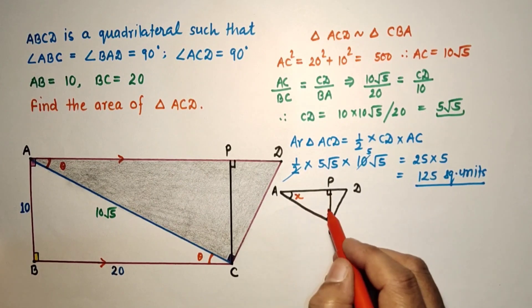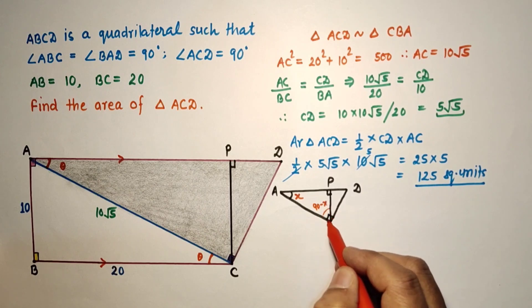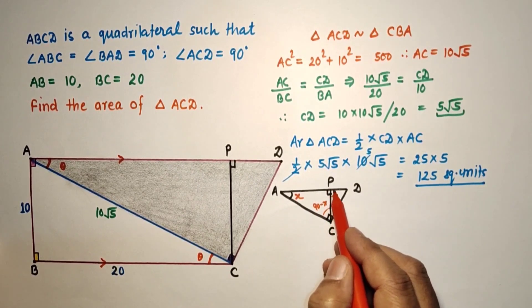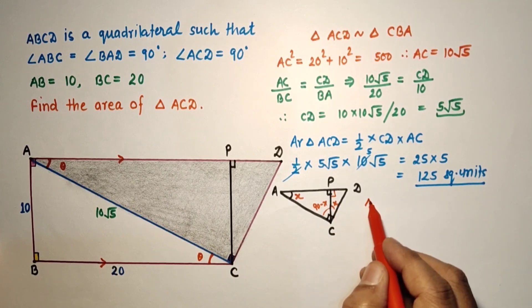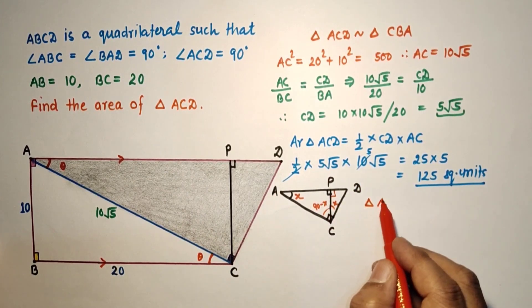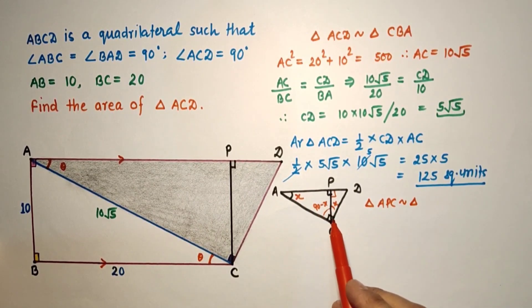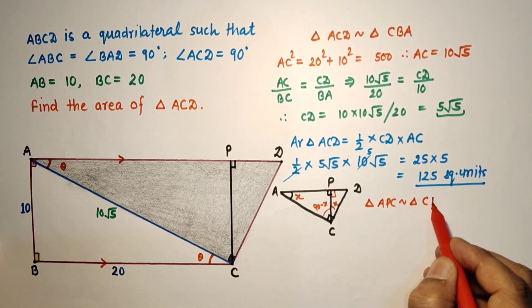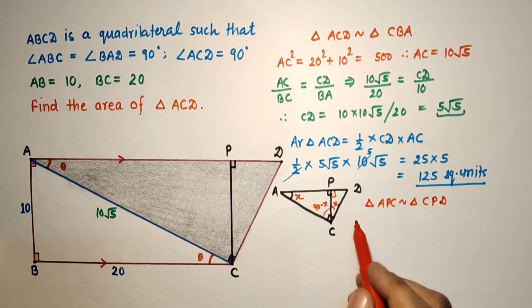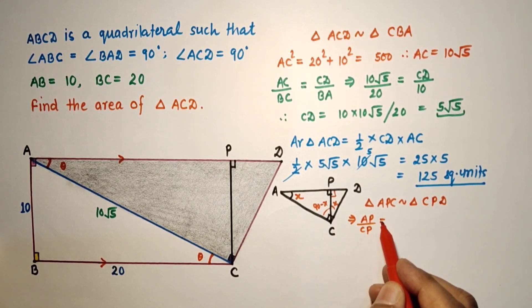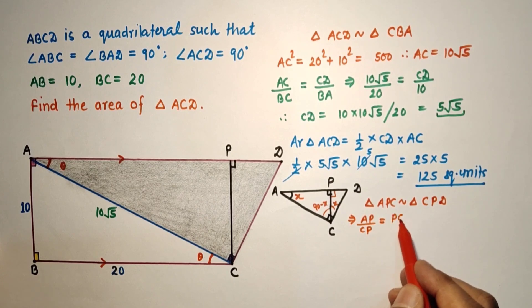If this is 90, this is 90, this is X, so this will be 90 minus X. And this whole angle is 90, this is 90 minus X, so this will be X. So X, 90, X, 90. These two triangles are similar. Triangle APC is similar to triangle CPD by AA test of similarity. Corresponding sides are in the same proportion, so AP over CP equals PC over PD.